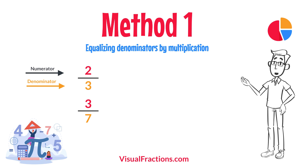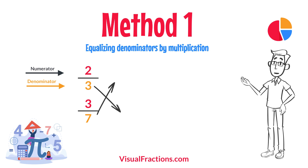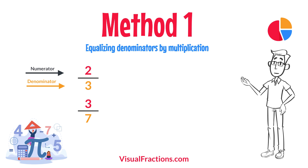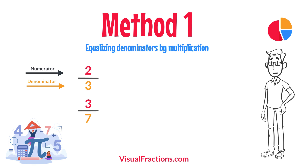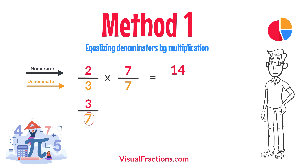First, let's equalize the denominators by multiplying each fraction's numerator and denominator by the other fraction's denominator. This method works by using the denominators of each fraction to create a common denominator, allowing us to compare the fractions directly. For two-thirds, multiply both the numerator and the denominator by 7, the denominator of three-sevenths. This gives us 14 twenty-firsts.